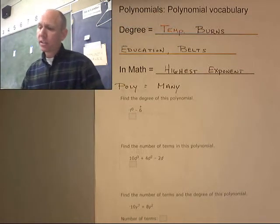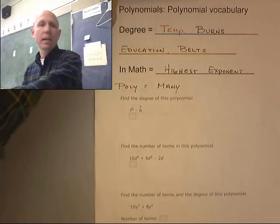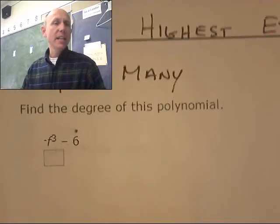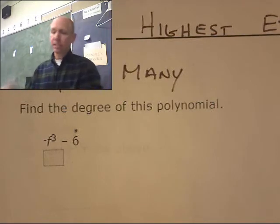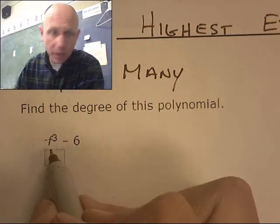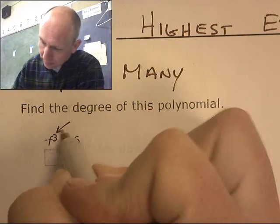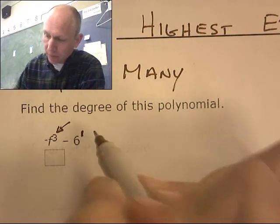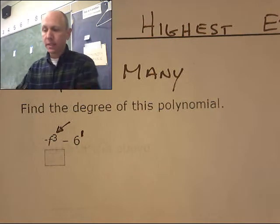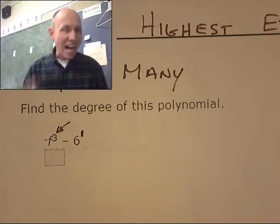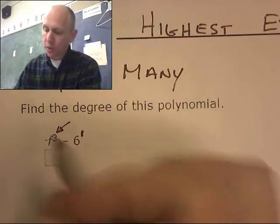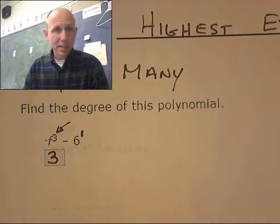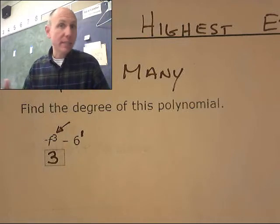So find the degree of this polynomial. And I just told you, just told you. It is based off of the highest exponent. So I have two pieces here. I have an f to the third. And I have a six to the, if there's nothing there, it's a one. So what degree is this? Is this a first degree or a third degree? It's based off of the highest exponent. This is a third degree polynomial. That's it. I look at all the exponents. I figure out which exponent is the highest. That's my degree.